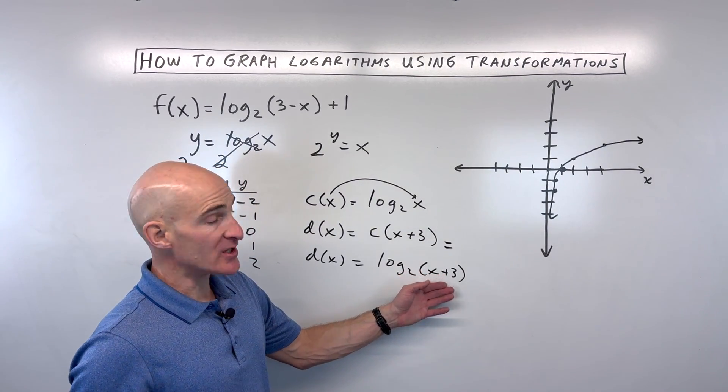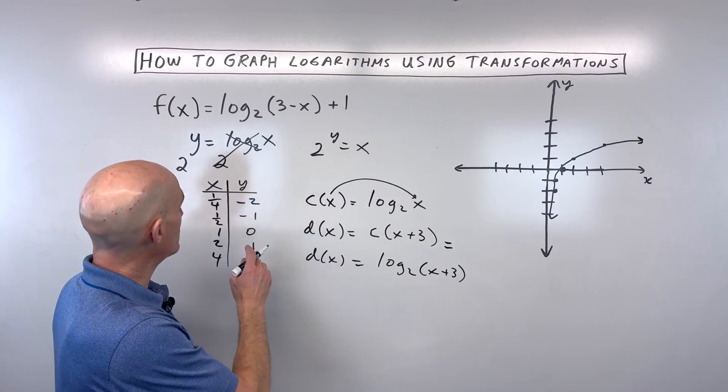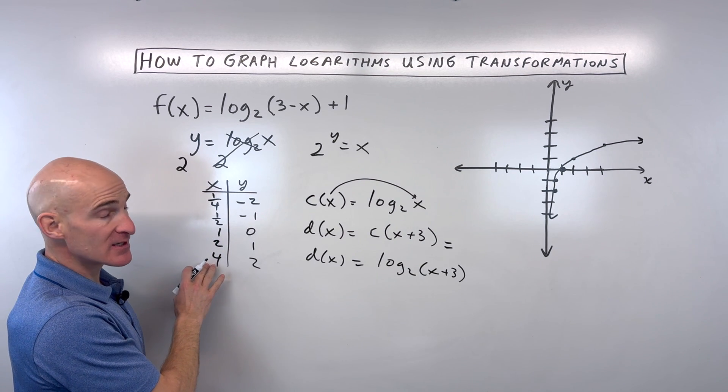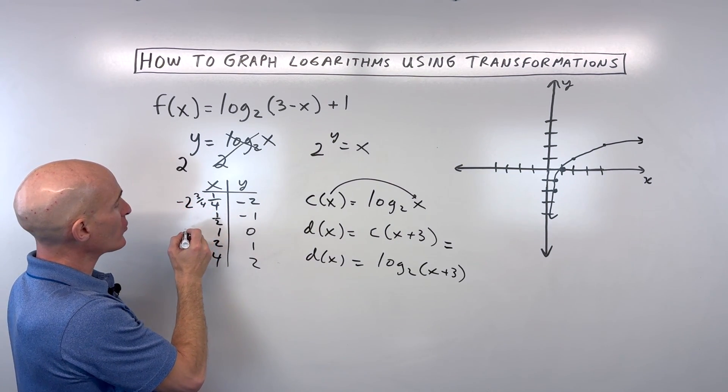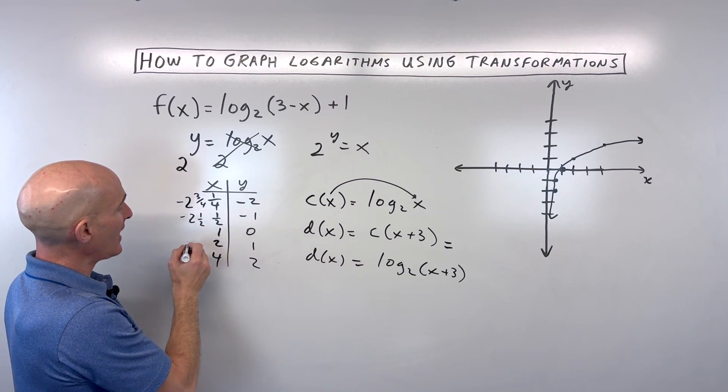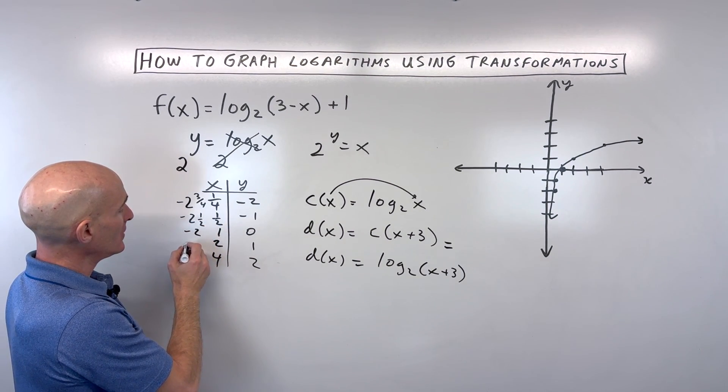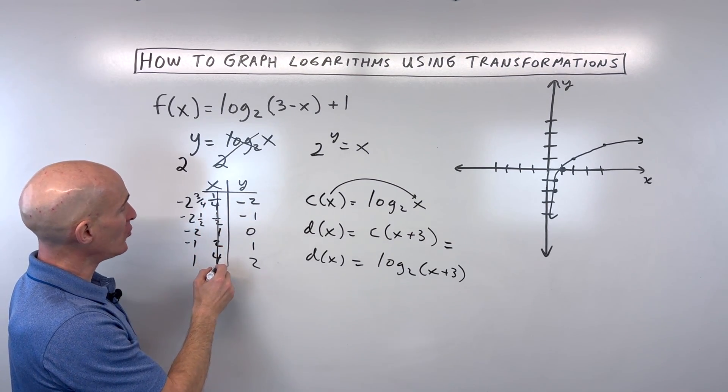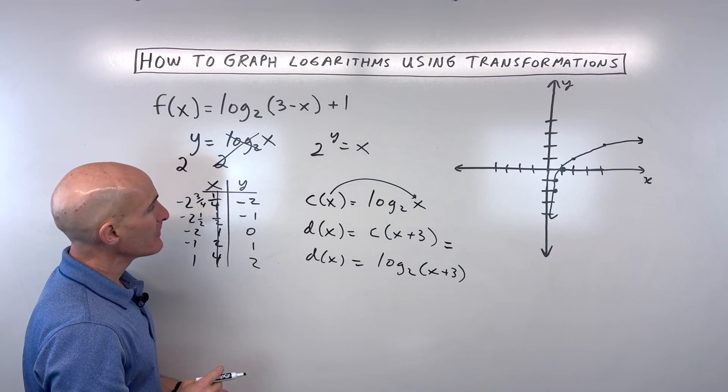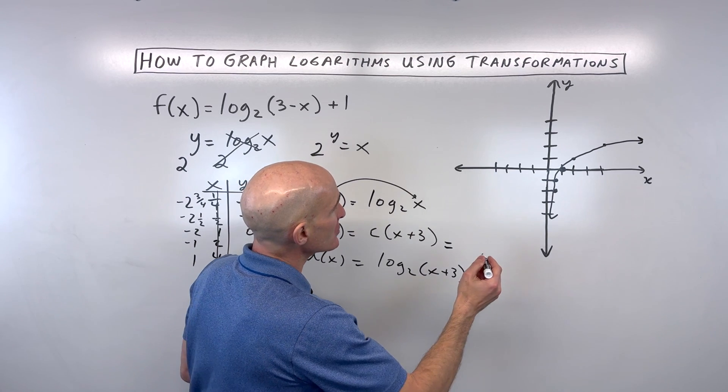But the x plus 3, it's going to shift the graph left 3. So what I'm going to do is I'm going to subtract 3 from all these x values. So this is going to give us negative 2 and 3/4, negative 2 and a half, negative 2, negative 1, and 1. So I'm going to cross out those old x values. These are our new ones. And that's going to shift the graph left 3.